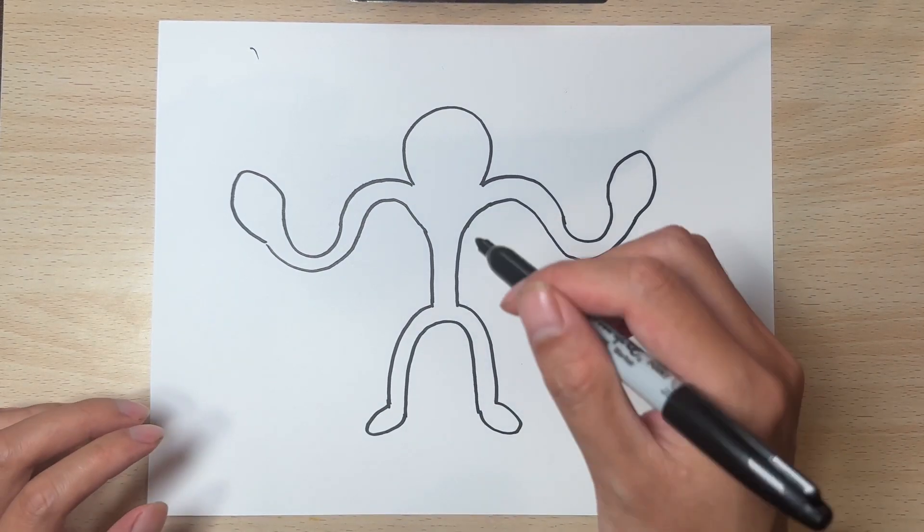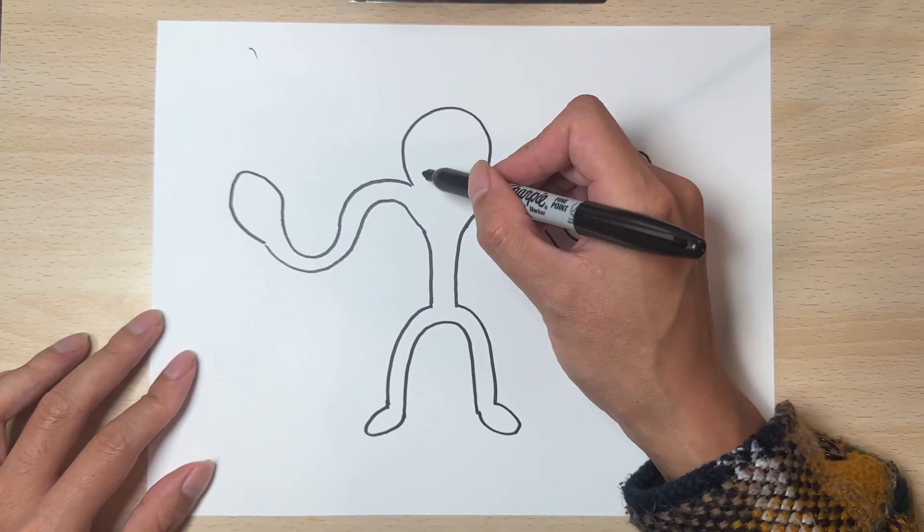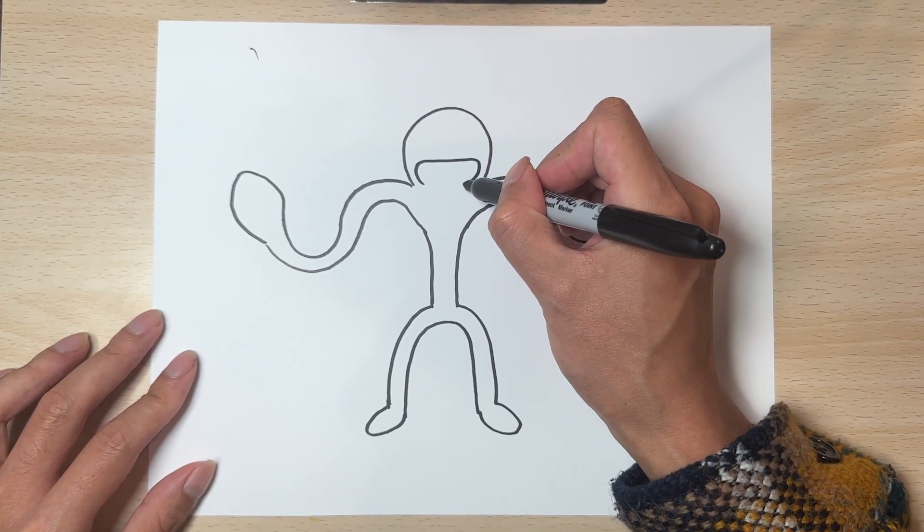With the body done, let's do some details. Lojo has a big mouth. So I could add in the mouth on top.